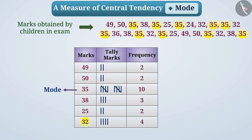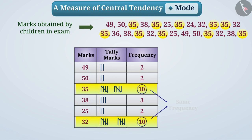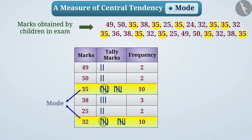Suppose there were 6 more children who got 32 marks. Then the number of children who got 32 marks would be 10, equal to the number scoring 35 marks. In this way, there would be 2 observations with the same highest frequency, giving us 2 modes. Hence, modes can be more than 1.